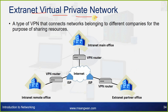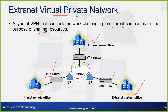Extranet virtual private network is a type of VPN that connects networks belonging to different companies for the purpose of sharing resources. VPN routers and the internet are used so that the main office, remote office, and partner offices can share resources. In all three VPN types, the internet is used securely by creating a tunnel through it, whether hardware-based or software-based through the ISP.